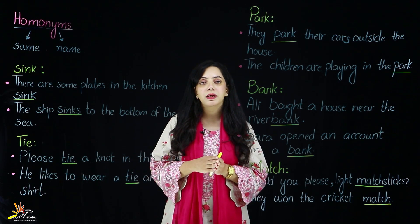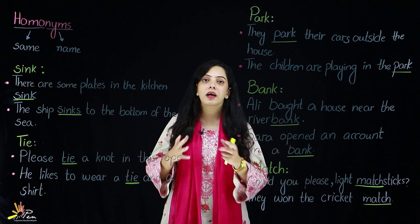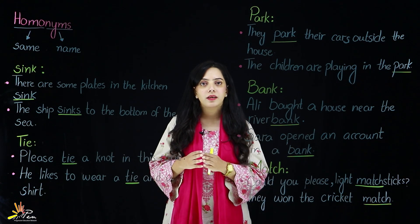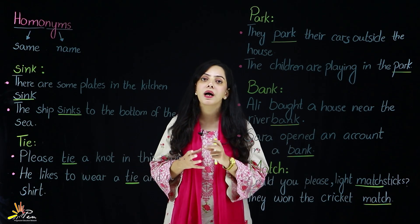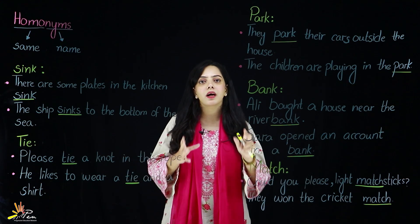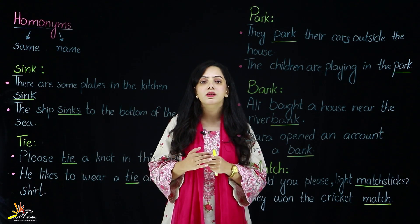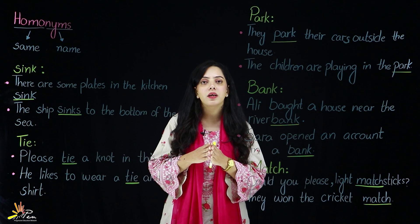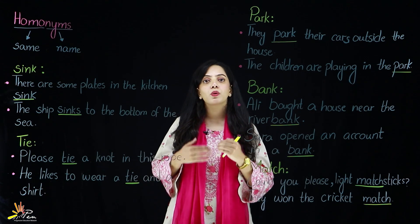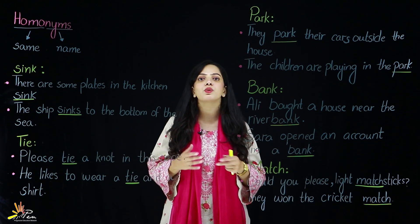Next homonym is 'park'. Park can be used in two ways. The first meaning that comes to mind is the place with greenery, trees, a garden-type area where children and adults play and there are swings — a park. The other meaning is when you take a vehicle somewhere and place it there — to park a car — like a parking area or slot that has been specifically allocated for parking cars. Example: 'They park their cars outside the house' — here, park means placing the car somewhere safe. 'The children are playing in the park' — clearly this refers to the green recreational park.